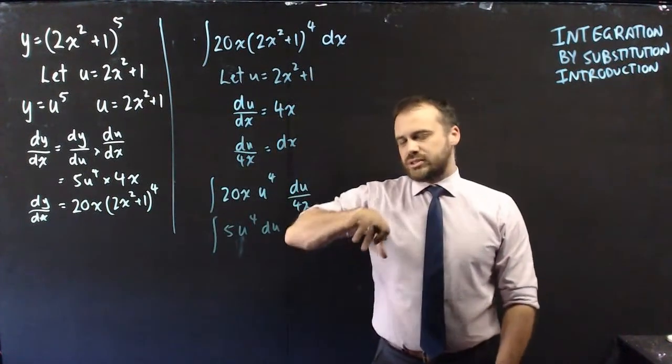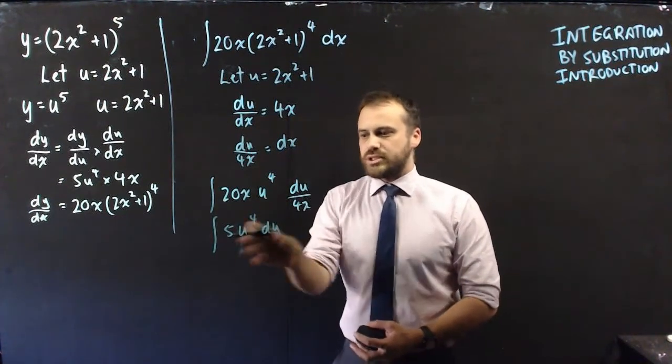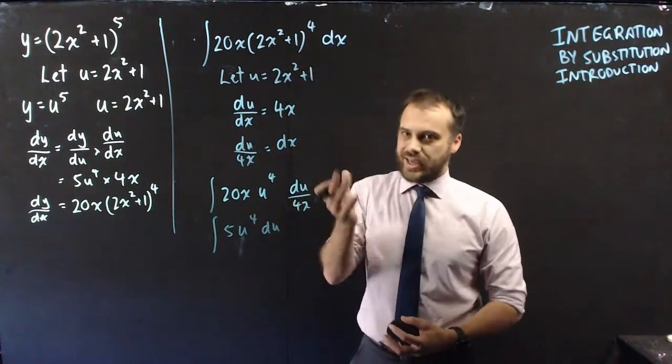This is sometimes called the change of variable rule. You can see that we've turned this into an integral with respect to u instead of an integral with respect to x.